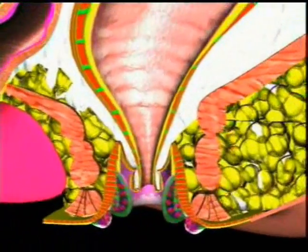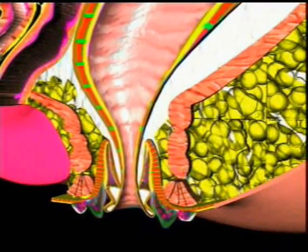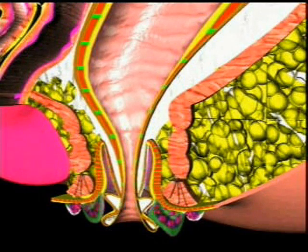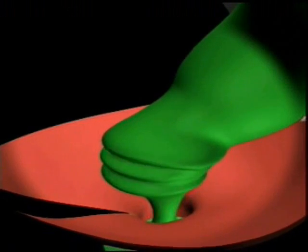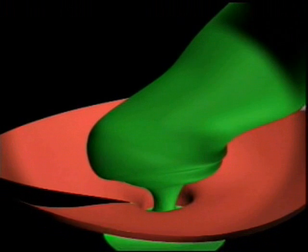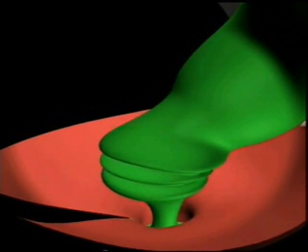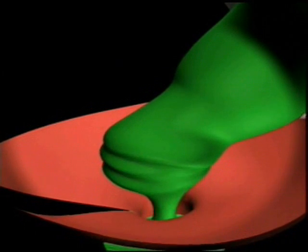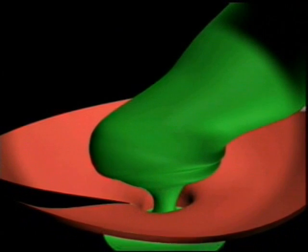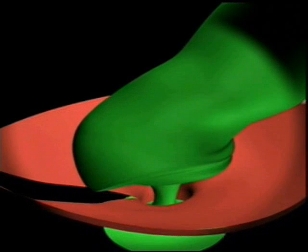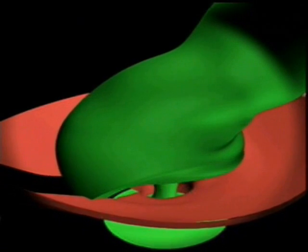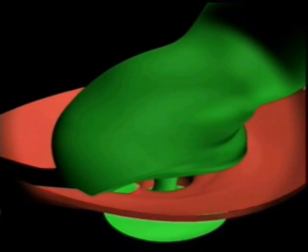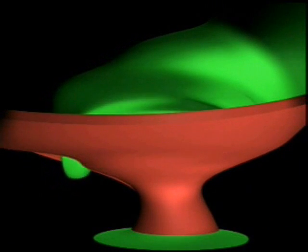These mechanisms work only if the rectum is capable of creating an endoluminal pressure gradient higher than the residual closure pressure of the anal sphincters. This pressure occurs if the rectal walls offer valid mechanical resistance to a certain degree of filling. The extreme thinning or disappearance of this structure leads to the incapacity of the rectum to support the pressure necessary for defecation, so the patient is unable to evacuate and increases straining.